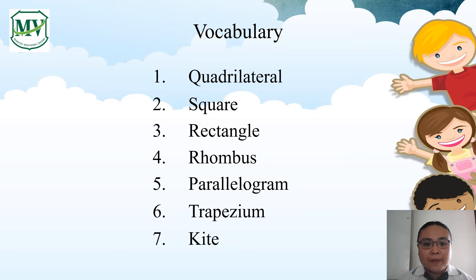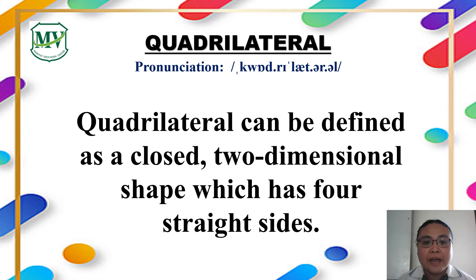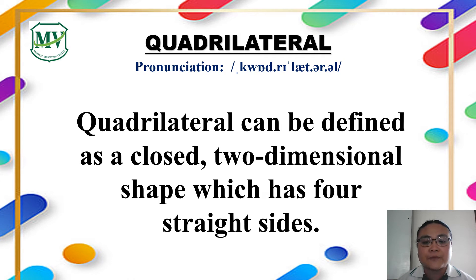Now let's learn more about the types of quadrilateral. First, we have to know what a quadrilateral is. Quadrilateral can be defined as a closed two-dimensional shape which has four straight sides. In this video, we are going to learn about the six types of quadrilateral and their properties.